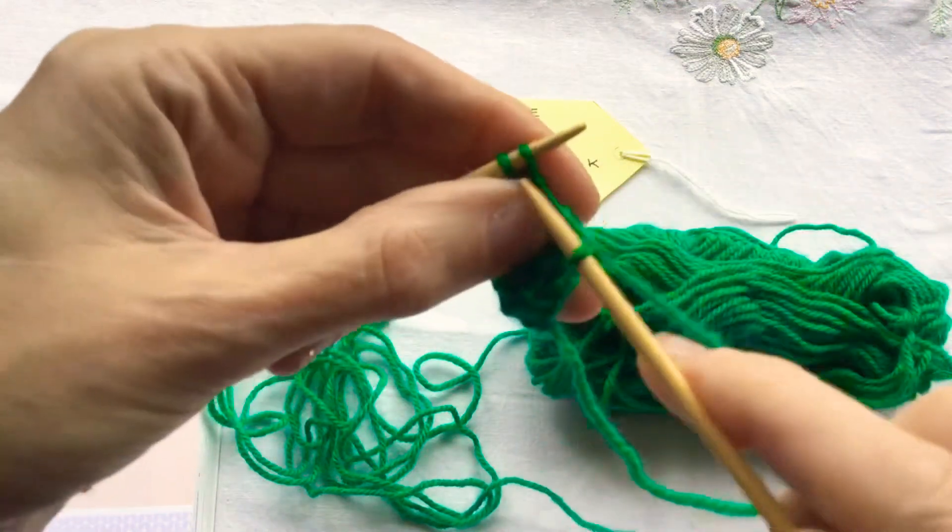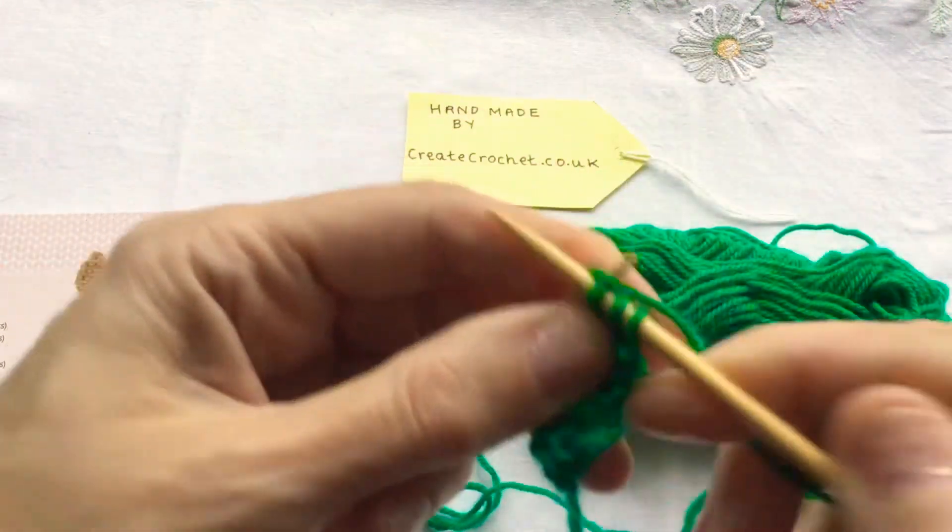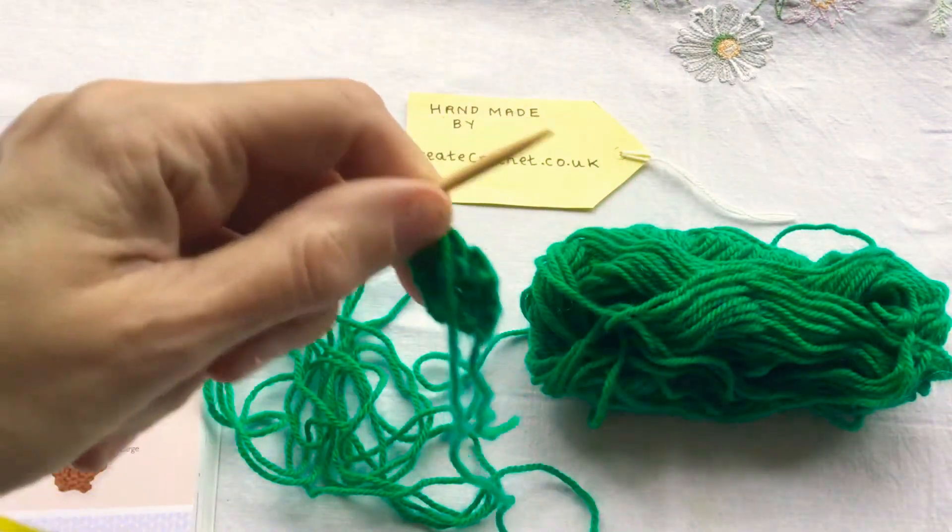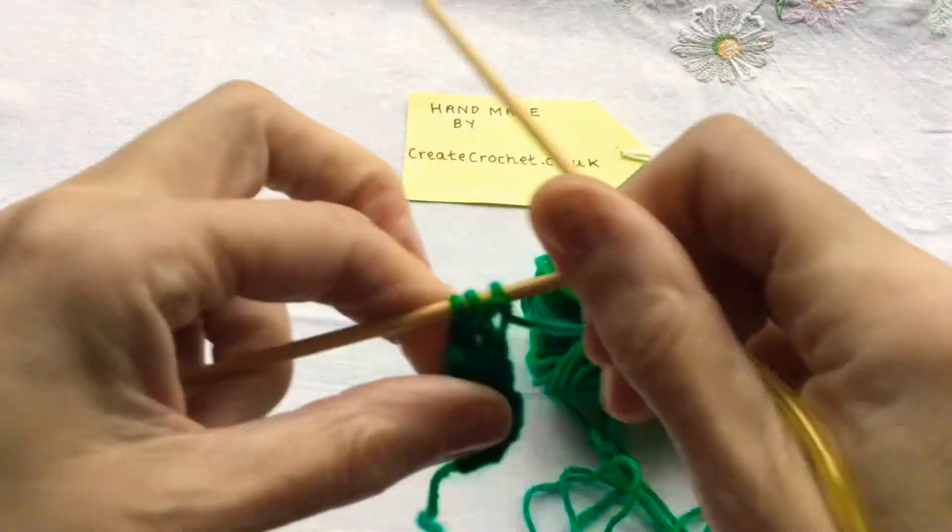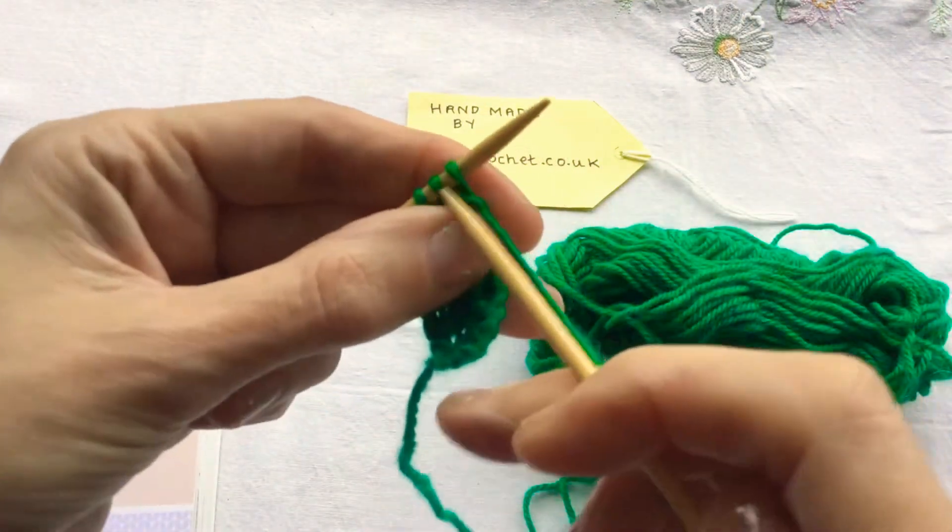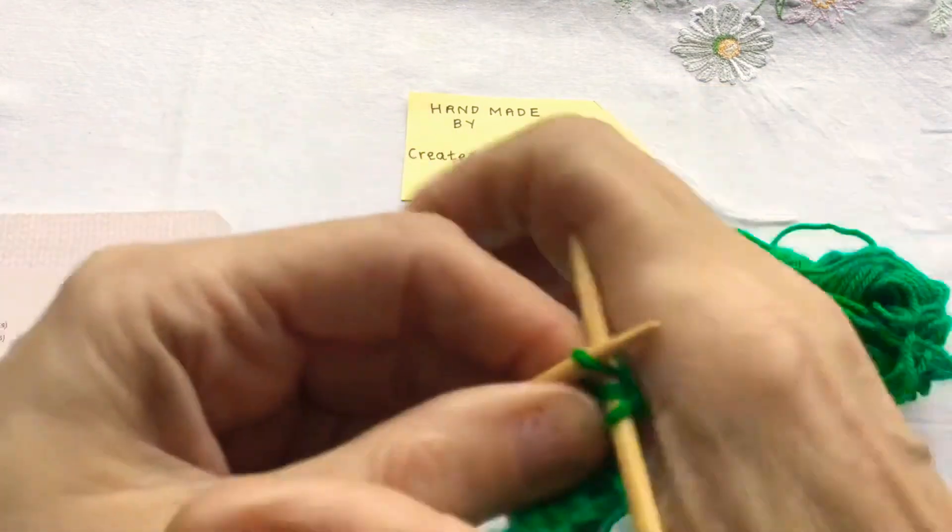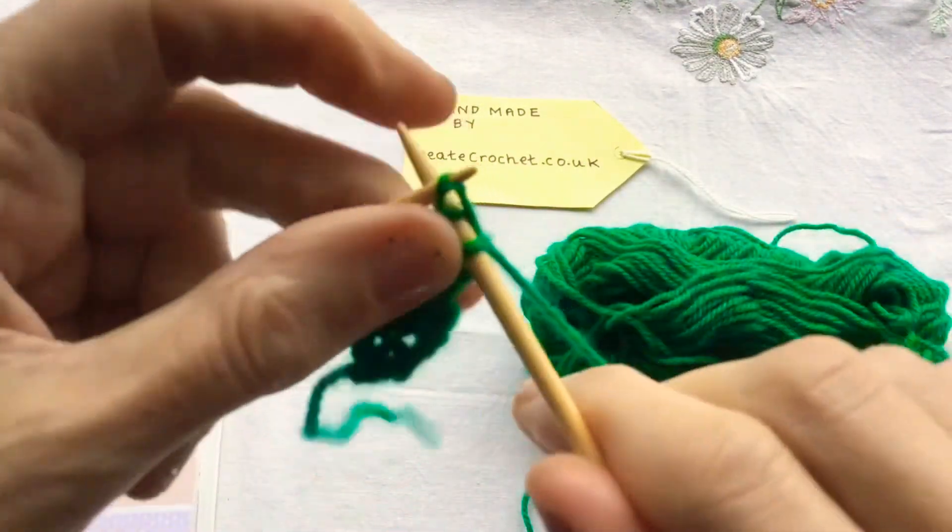Knit row 10, and row 11 is slip slip knit and pass the slip stitches over.